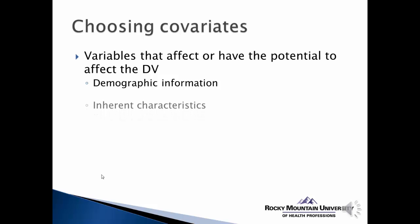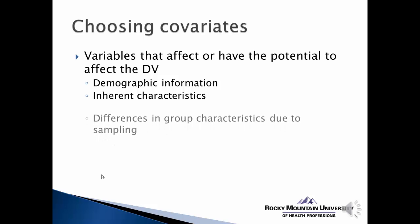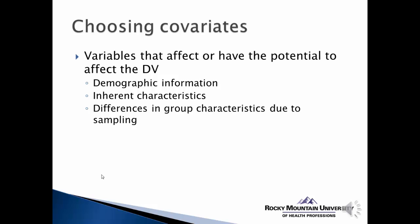So there are some pretty common variables that tend to have a potential to affect the dependent variable and become potential covariates. One is demographic information like age, the place you live, height, or weight — basically inherent characteristics that people might have. Other things that could be covariates are differences in the groups due to sampling. If one treatment group has a very different sample makeup compared to another — more males, or a different age distribution — these differences due to convenience or non-random sampling could become a potential covariate.